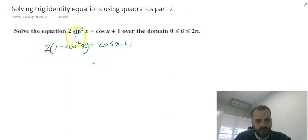Now I can expand this to 2 - 2cos²x = cos x + 1. Now I'm going to play that mathematical trick where I let cos x equal something. Let's let it equal u, a popular choice.